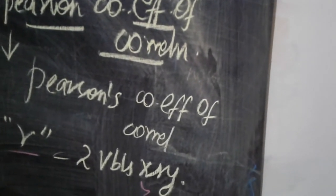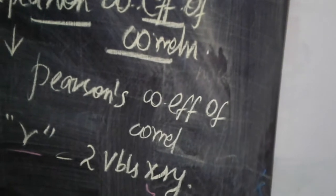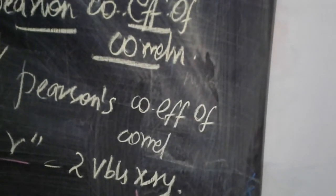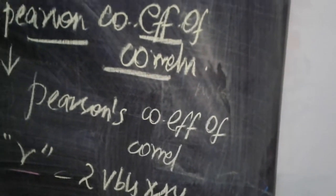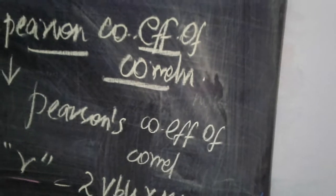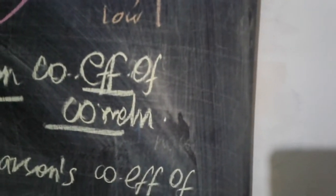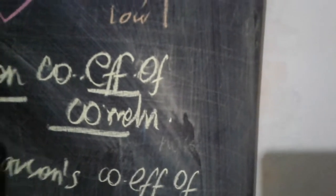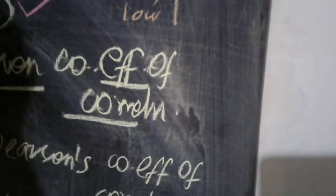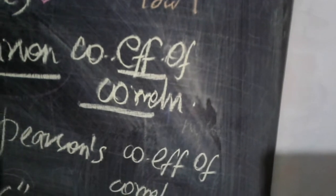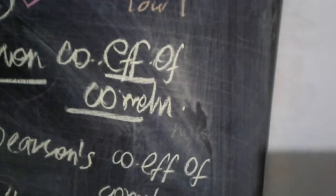Karl Pearson's coefficient of correlation always lies between the values +1 and −1. It is denoted by the symbol r, shows the relationship between two variables x and y, and was introduced by the statistician Karl Pearson.